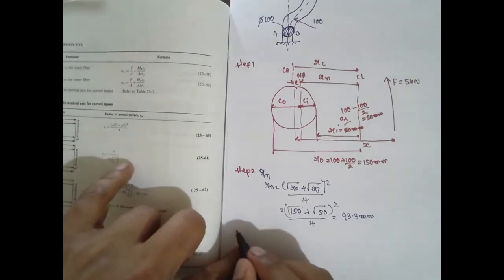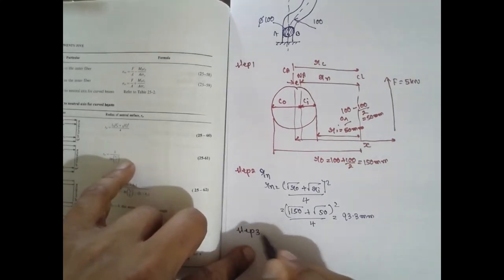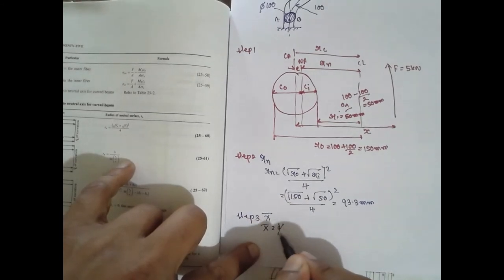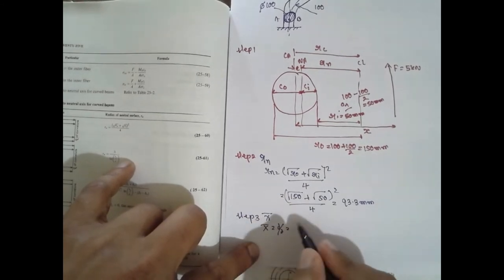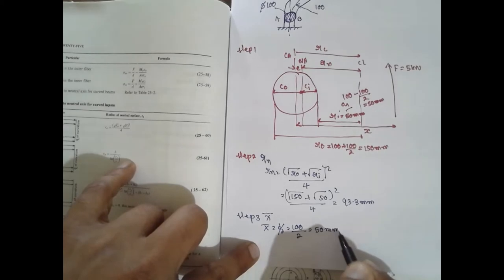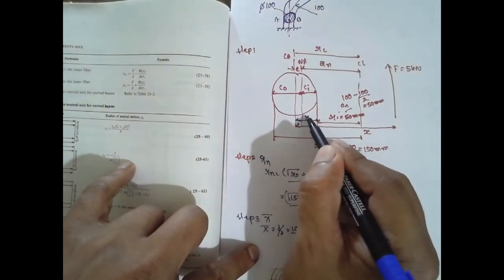Next, step 3: you have to find out x bar. x bar is nothing but c0. x bar is nothing but d by 2. x bar is 100. x bar is 50. This is the distance you wanted, x bar.